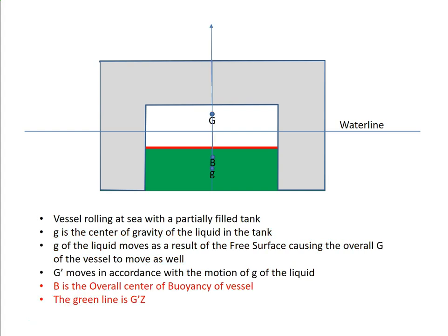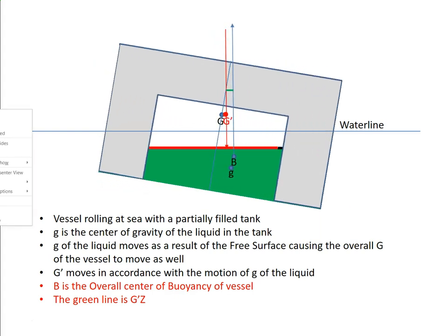Now we're going to add the center of buoyancy. This is the overall center of gravity of the vessel, this is the center of gravity of the liquid cargo, and this is the buoyancy of the vessel. As the vessel inclines, here's the underwater shape of the vessel, and B is moving off the centerline. Here's the shifted G acting downward, here's B acting upward. They're separated by a distance — that is gz. This distance between the red line and the blue line is gz.